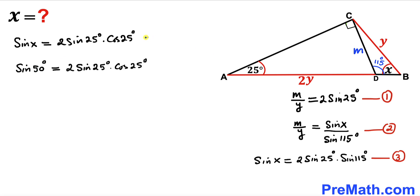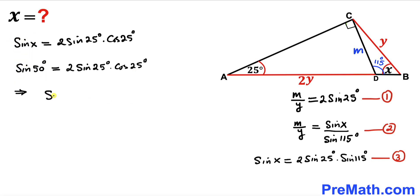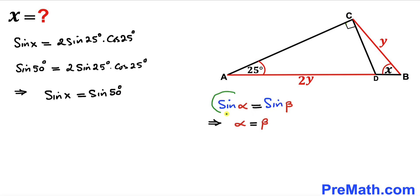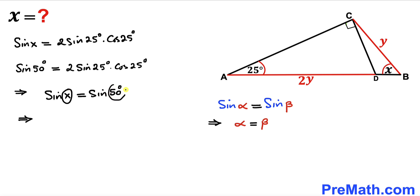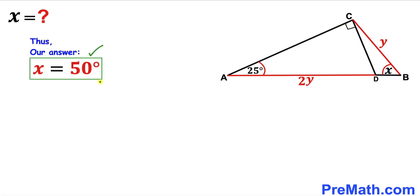Comparing the two sides: since sin(x) = sin(50°), we conclude that angle x equals 50 degrees. Thanks for watching and please don't forget to subscribe for more exciting videos.